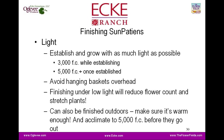For light levels in production, they do like bright light. Coming out of propagation they should be established to 3,000 foot-candles, and maintain that for the first couple of weeks until you have good root and shoot growth, then bump light levels up to 5,000-plus foot-candles once established. Avoid hanging baskets overhead — that contributes to stretch and reduces light levels in and around the plants. Finishing under low light levels will reduce flower count and result in stretched plants. Plan for these to have a space in the greenhouse without hanging baskets overhead and with good spacing. They can also be finished outdoors — just make sure it's warm enough and they're acclimated to 5,000 foot-candles before going out.